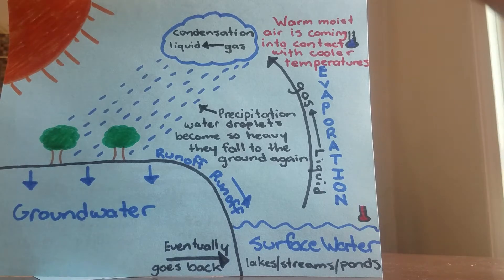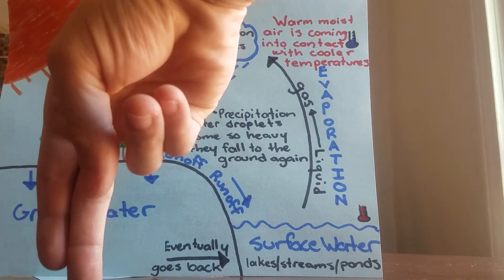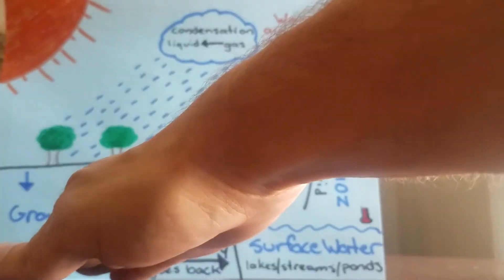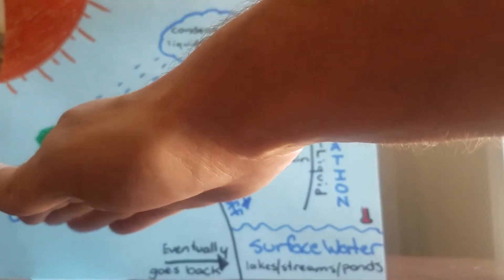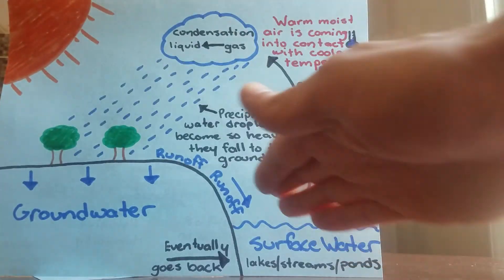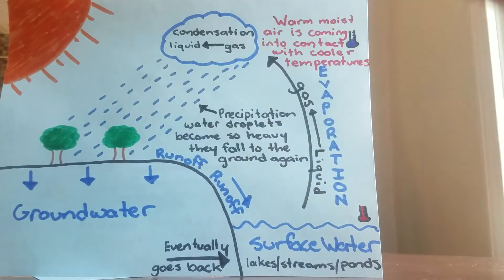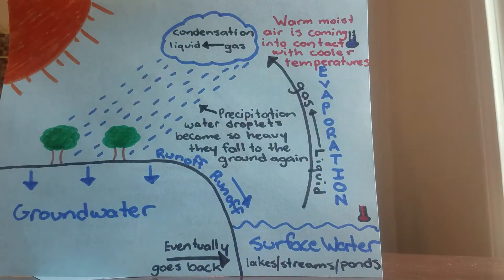So the water does two things when it comes from the sky: either goes into the groundwater, or the groundwater actually gets saturated with water and actually runs off downhill and fills up lakes, rivers, streams, ponds, or any kind of surface water. So I'll give you a quick demonstration.